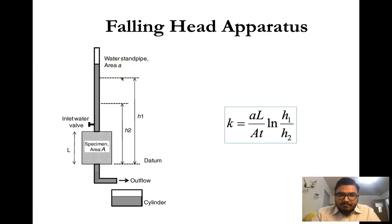We will get the time and we will know the head before time t and after time t, that means h1 and h2. Small a is the cross section of that standpipe, that means the upper pipe. Capital A is the cross section of the specimen, that means the cross section of the permeability cell. h1 and h2 is the height difference and t is the time required to fall from h1 to h2.